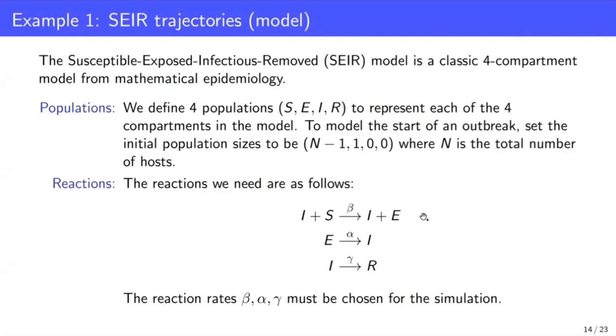The reactions that would define an SEIR model in Remaster would be as follows. So here we can see, just for this first reaction, we've got an infection, where an infected individual and a susceptible individual interact to produce one more exposed individual. These exposed individuals eventually become infectious, and those infectious individuals are eventually removed, all of these at various rates. And these rates, beta, alpha, gamma, must be chosen for the simulation. You need numerical values for these, of course.